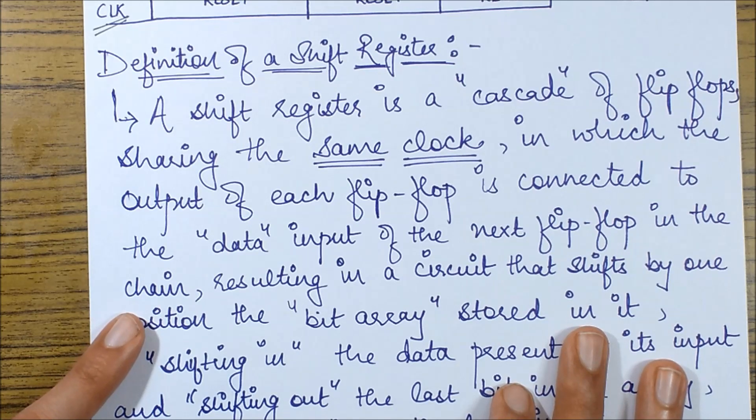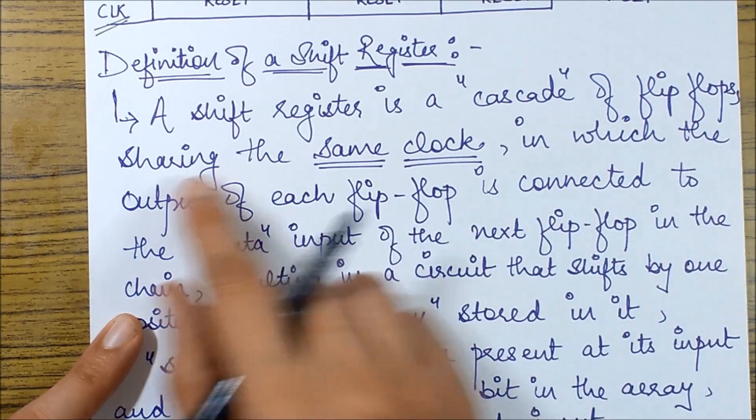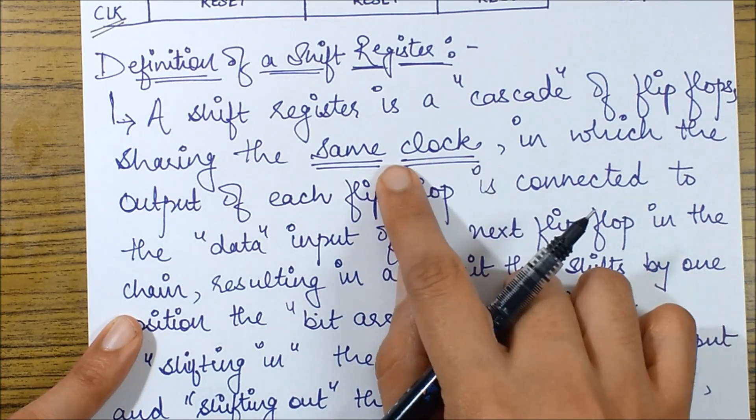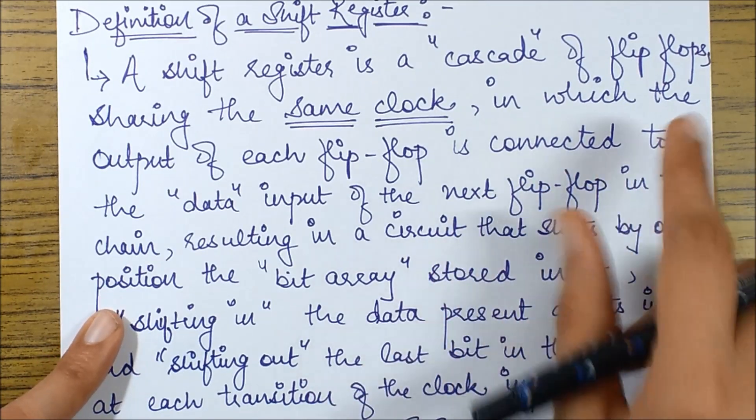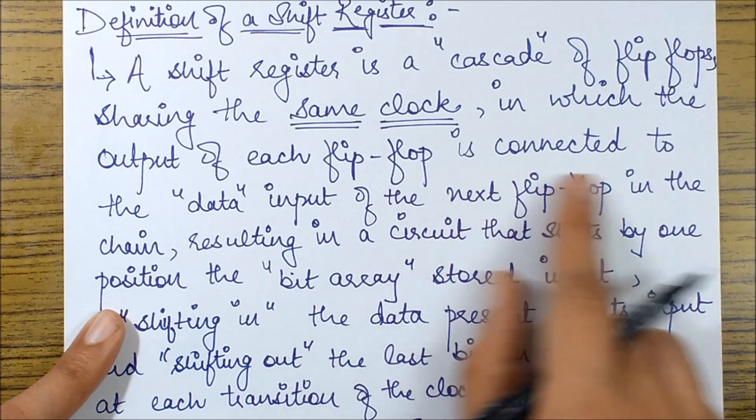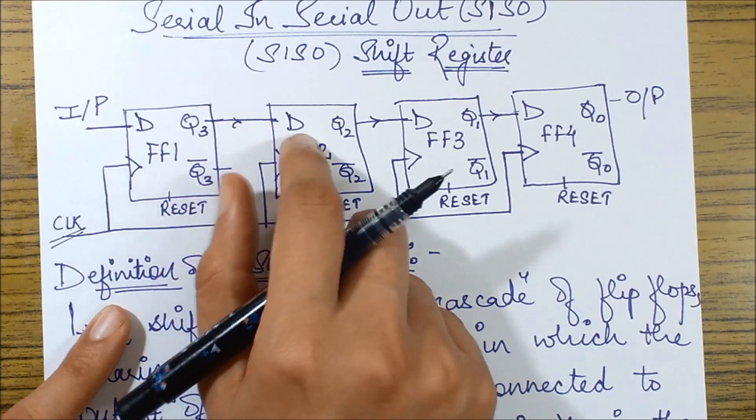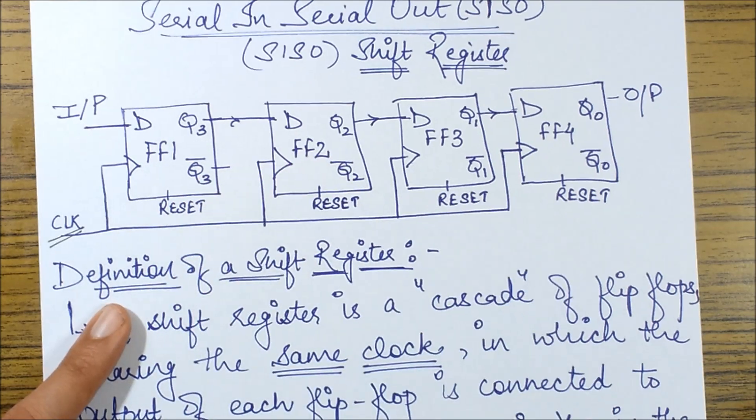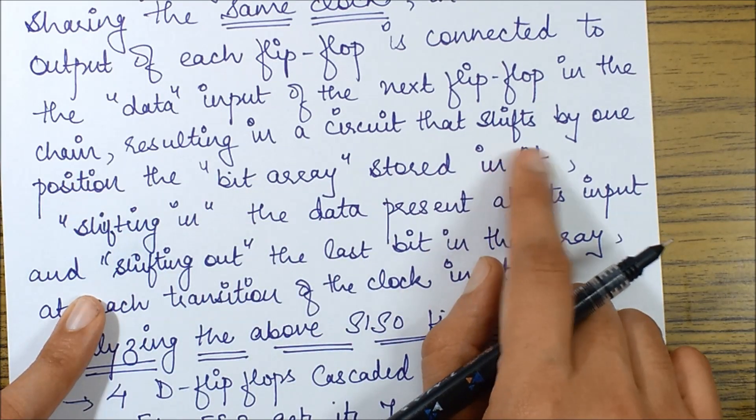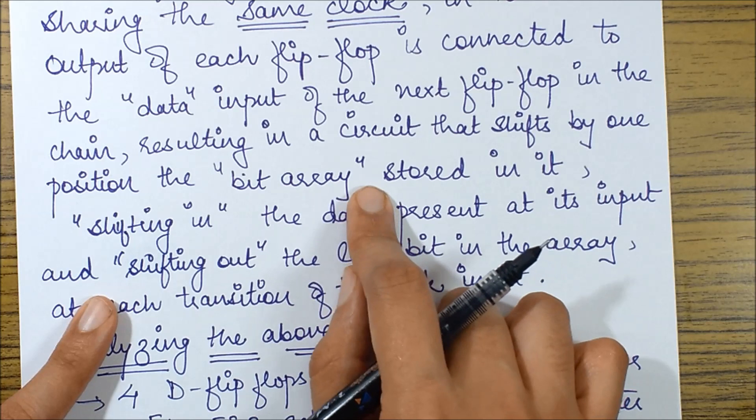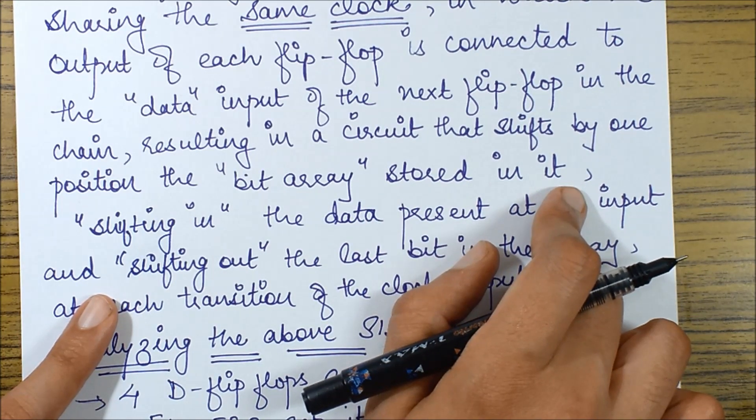Let's see its definition now. It says that a shift register is a cascade of flip-flops. I'll come to that. Sharing the same clock, we already saw that it shares the same clock. In which the output of each flip-flop is connected to the data input of the next flip-flop in the chain.